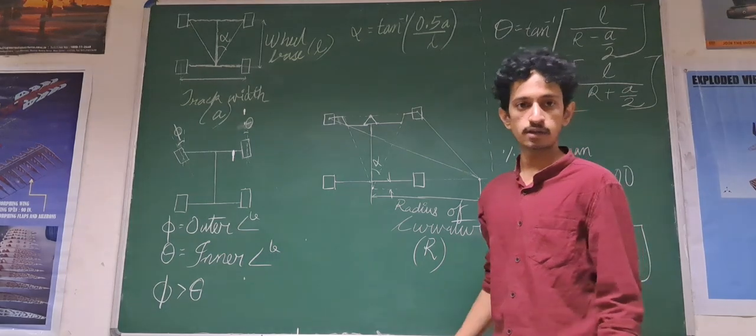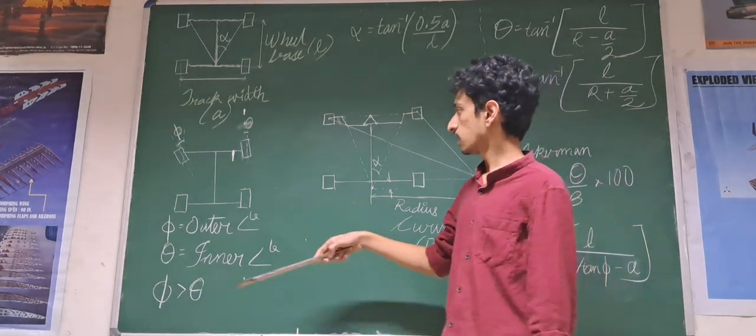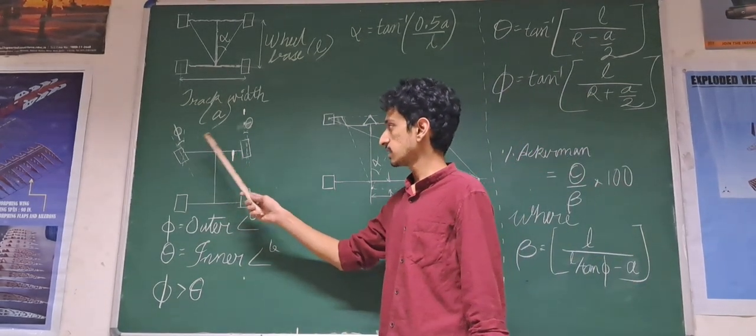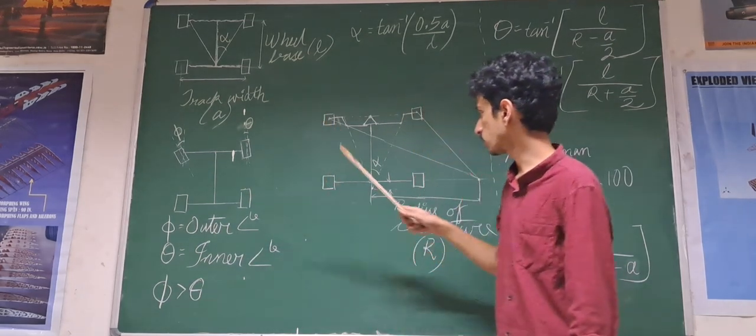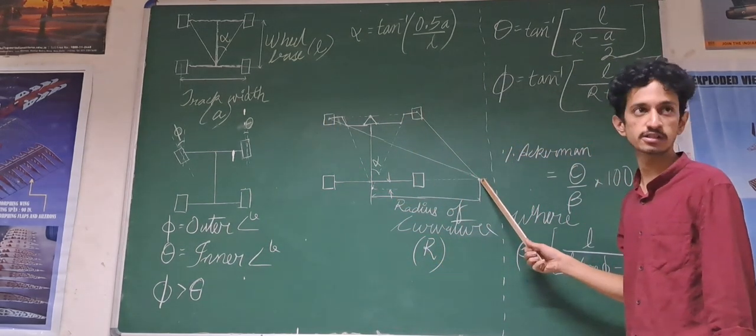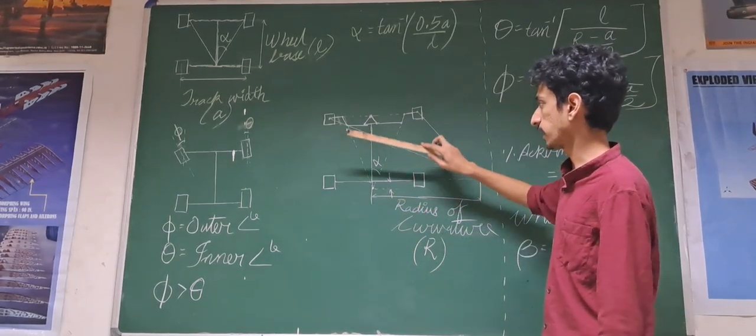Now, when we turn a vehicle, we can see that the outer wheel turns lesser than the inner wheel. This is because, imagine a centre of curvature when you are turning a vehicle. At that moment of time,